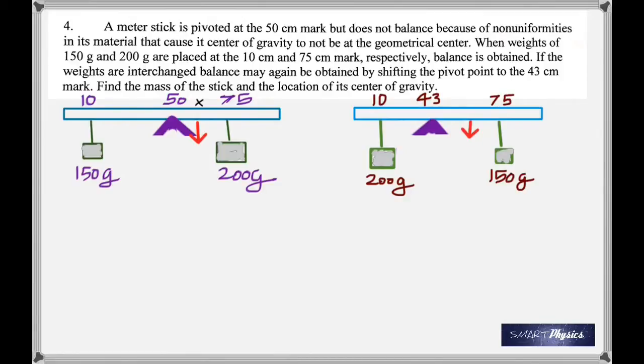Now, how do I know that it's on the right side? If you look at the torque due to the 150 gram at the pivot, just keeping it in grams, it's going to be 150 times 40 centimeters, which is 6,000.